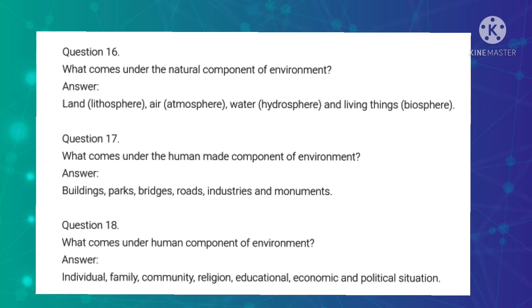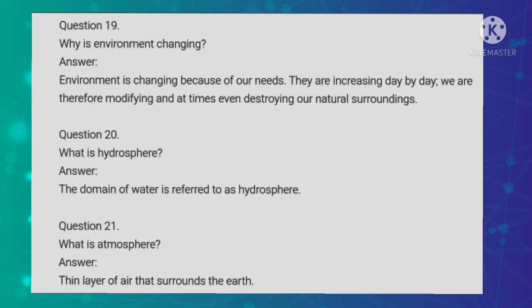Seventeenth question: What comes under the human-made component of environment? Answer: Bridges, parks, buildings, roads, industries and monuments. Eighteenth question: What comes under the human component of environment? Answer: Individual, family, community, religion, educational, economic and political situation.